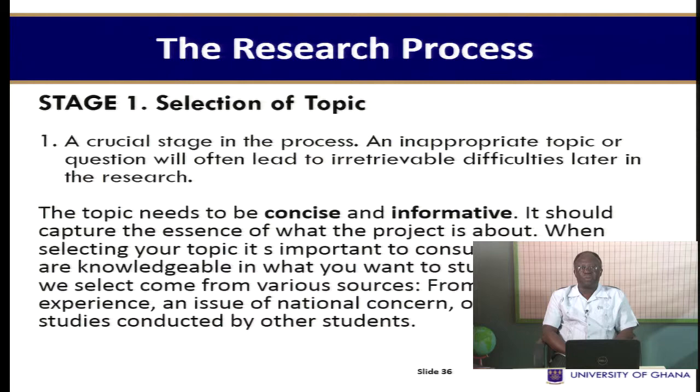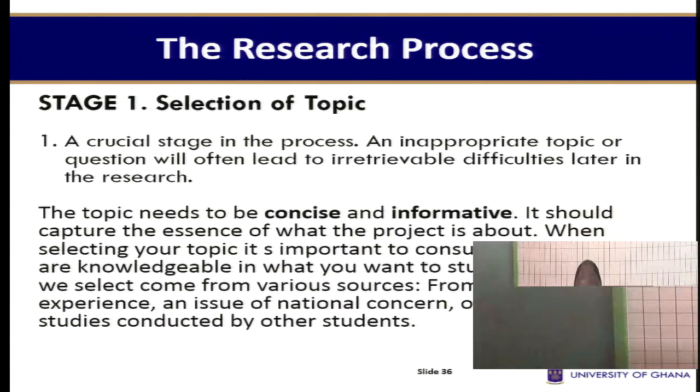Stage one is the selection of the topic. This is a crucial stage in the research process. The topic needs to be concise and informative; it should cover the essence of what the project seeks to achieve. When selecting your topic, it is important to consult people who are knowledgeable in what you want to study. The topics we select come from various sources — they may come from our personal experiences, from an issue of national concern, or from previous studies conducted by other students and researchers.